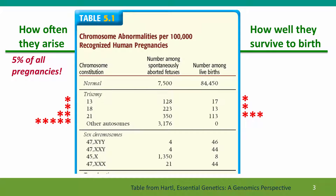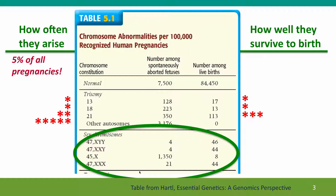Here are the frequencies again in our table of abnormalities per 100,000 pregnancies, and now we're focusing on the sex chromosome aneuploidies. You'll see there are several kinds listed. You can have an X and two Ys, or two Xs and a Y — these individuals are phenotypically male because they have a Y chromosome. Or you can have a single X (monosomy X), or multiple copies of an X and no Ys — these individuals are phenotypically female.